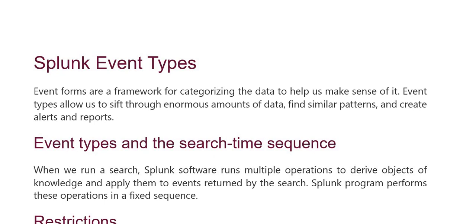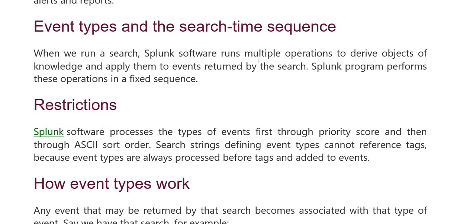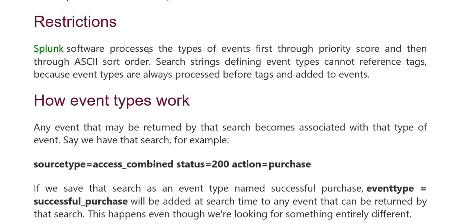Event types are the search-time sequence. When we run a search, Splunk software runs multiple operations, derives objects of knowledge and applies them to events returned by the search. Splunk has performed these operations in a fixed sequence. First, Splunk software processes types of events, which are prioritized by score and then sorted in ASCII order. Search strings define event types, which cannot reference tags, because event types are always processed before tags and added to events.